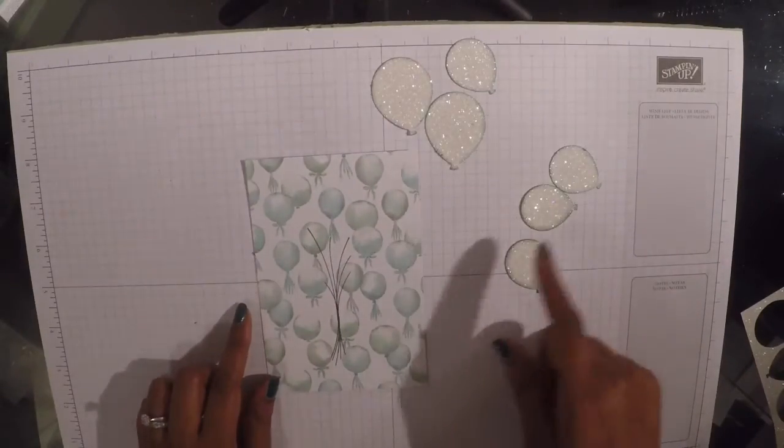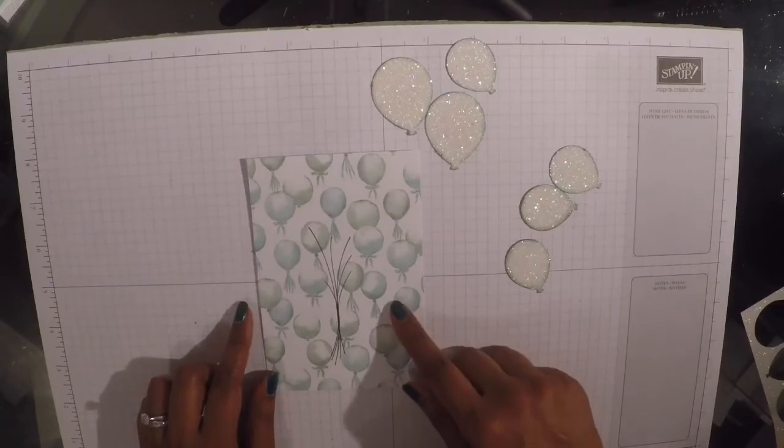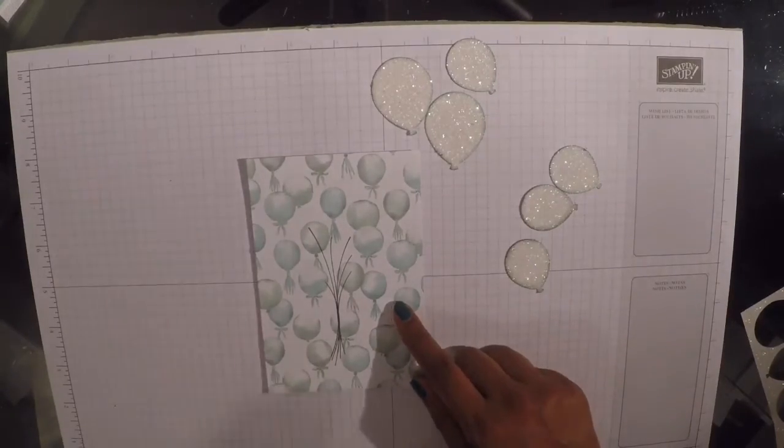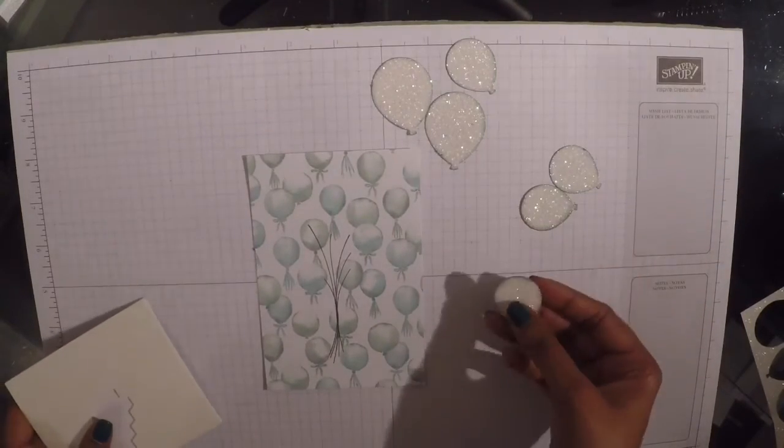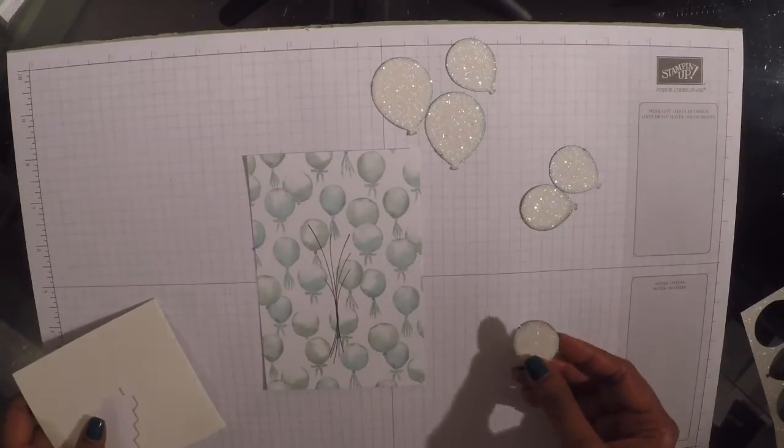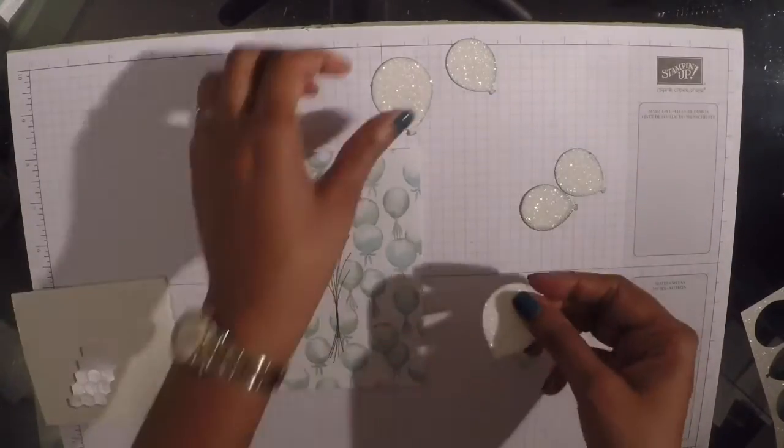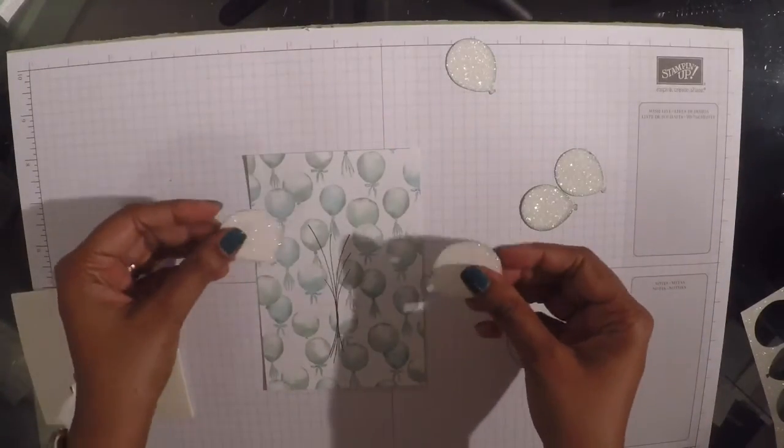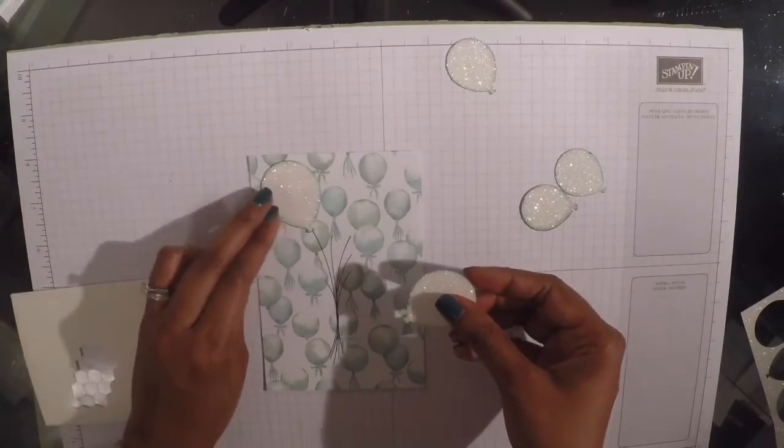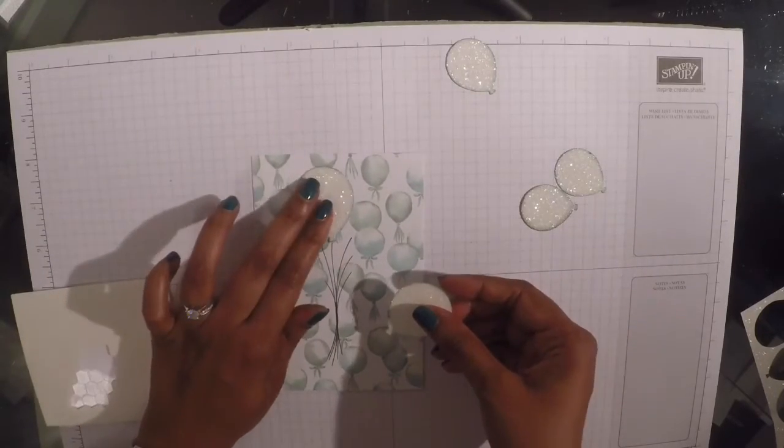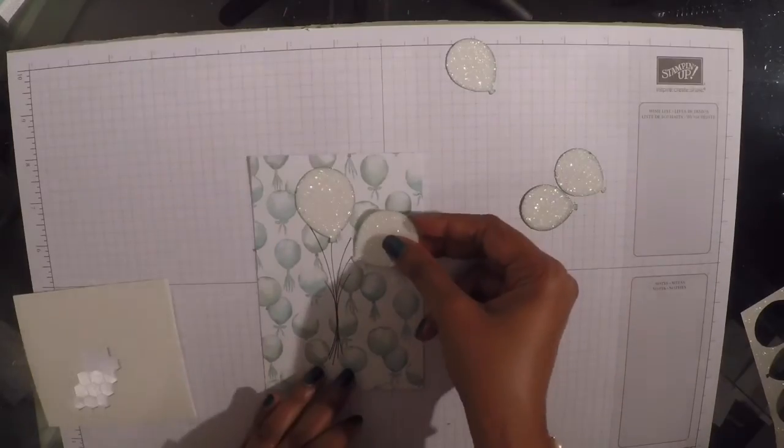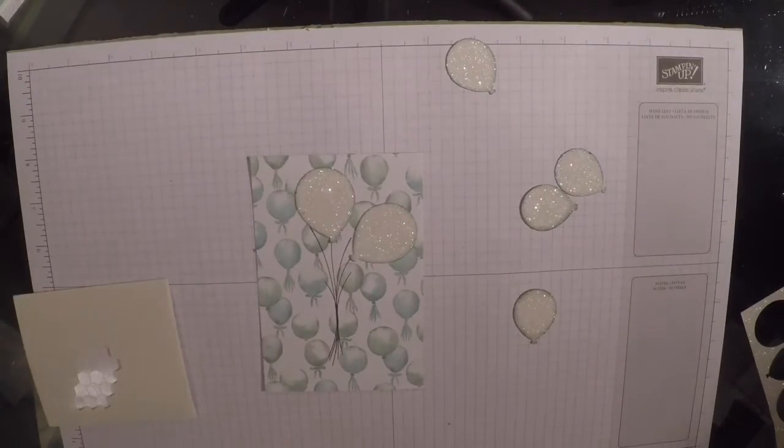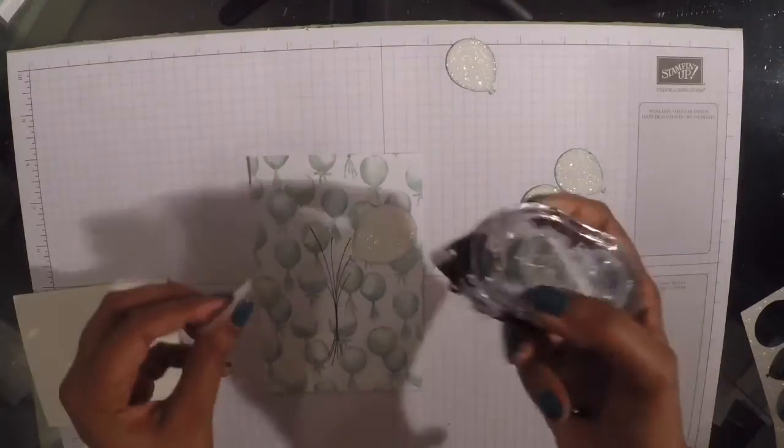Now I'm going to be assembling the balloons onto the top of the strings. There's no real set pattern to this. I'm just going to go with whatever I think will look good on the card. So I think I'm going to start by laying my big balloons down first of all. And I'm probably going to position one there and one there. And I'm going to just stick those down flat I think, with some snail.